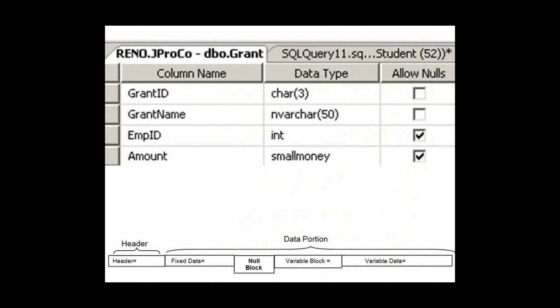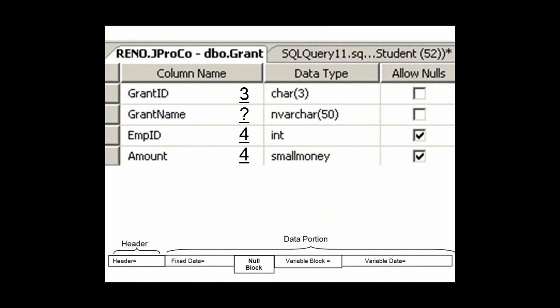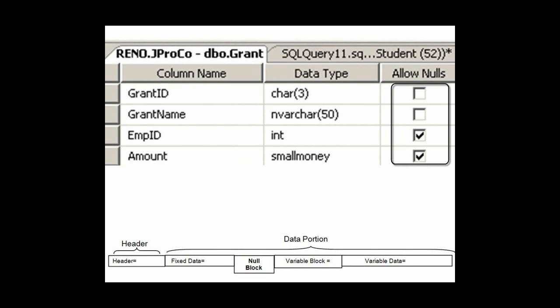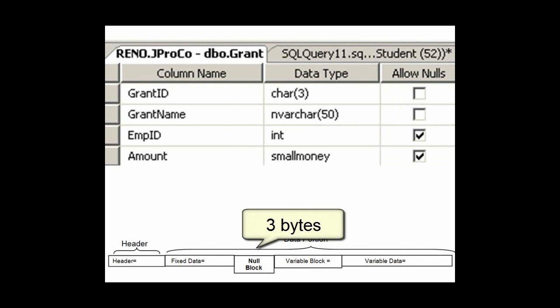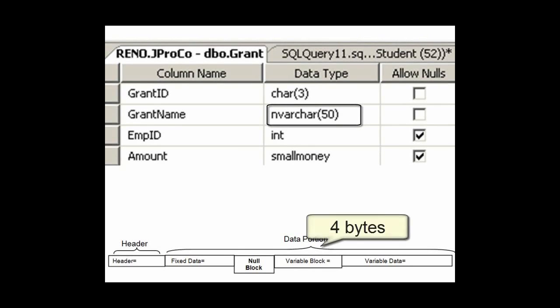Let's do the full-scale calculation of the data consumption of a row in the grant table. The header takes up four bytes. The fixed data consists of a char3 which takes up three bytes, an int which takes up four, and a small money which also takes up four. Therefore, our fixed data payload is 11 bytes. The null block — do we have any nullable data? If yes, then the null block needs to keep track of the fields in our table. How many total fields do we have? Four. That's between one and eight, so it's going to take up an additional byte in the null block. Our null block is now three bytes. The variable block — do we have any variable length data fields? Yes. The creation of the variable block takes up two bytes just to create it, and then an additional two bytes for each variable length data field. Since we only have one, our total size of our variable block is four.